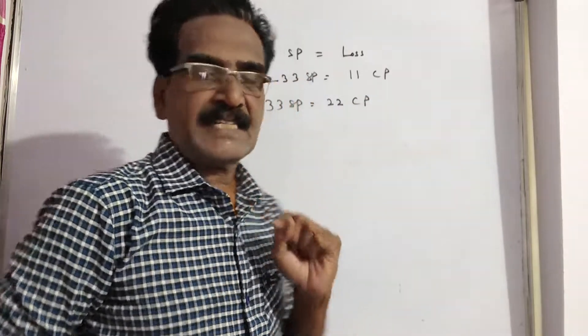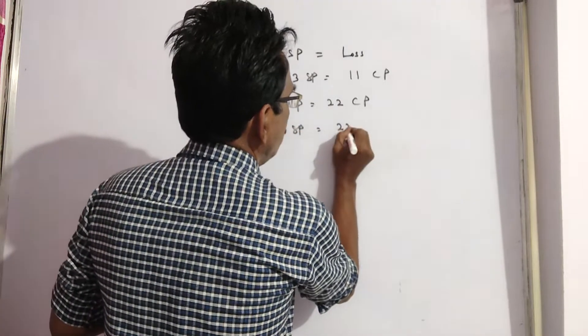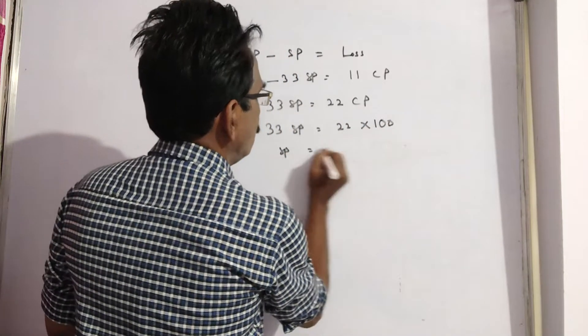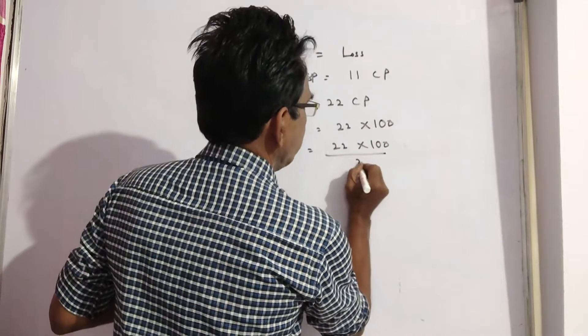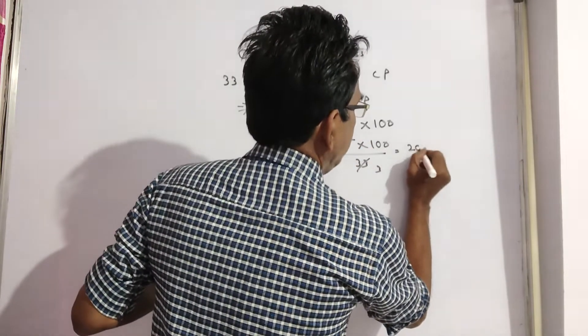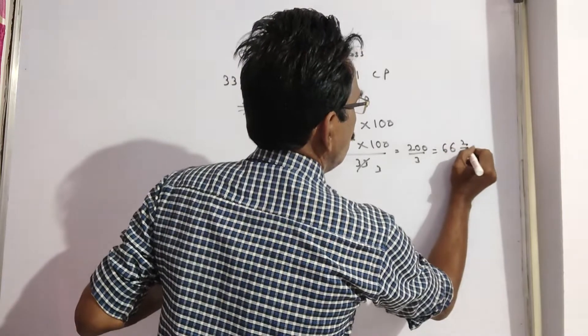assume cost price is 100. Now 33SP equals 22 into 100. SP equals 22 into 100 by 33. 11 threes, 11 twos. 200 by 3, which is 66 and 2 by 3.